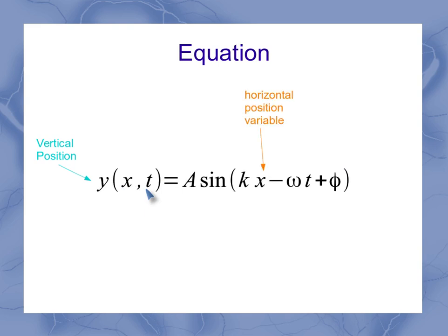The x is the horizontal position and t is the time variable. So we're looking for what's the vertical position of the wave at some horizontal position along the wave at some particular time.